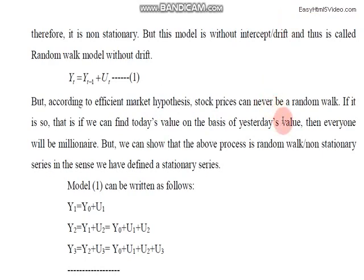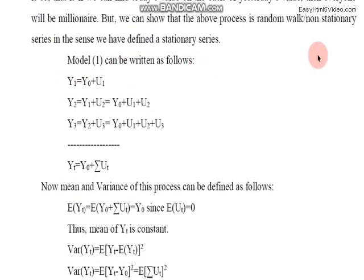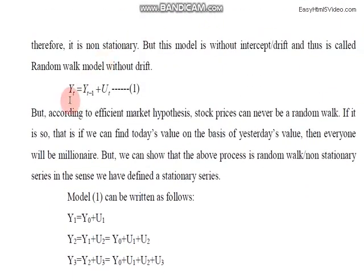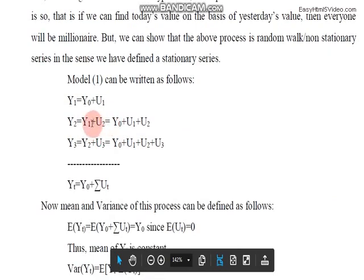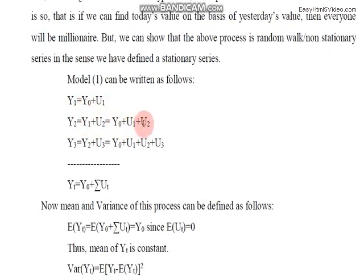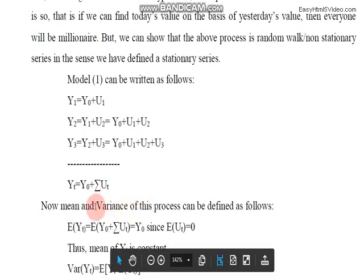We can prove that stock market prices can also follow a random walk. According to the random walk model, Y_1 depends upon Y_0 plus u_1; similarly Y_2 depends upon Y_1 plus u_2, and substituting Y_1 gives Y_0 plus u_1 plus u_2. Similarly Y_3 equals Y_2 plus u_3, substituting Y_2. Generalizing this, Y_t equals Y_0 plus the summation of various u's. From this, if you find the mean and variance of Y_t: